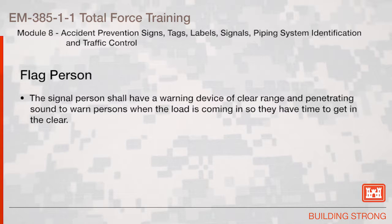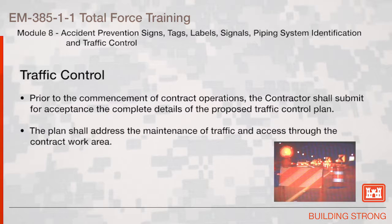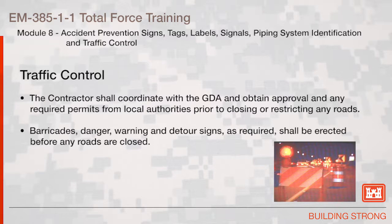The signal person shall have a warning device of clear range and penetrating sound to warn persons when the load is coming in so they have time to get in the clear. Prior to the commencement of contract operations, the contractor shall submit for acceptance the complete details of the proposed traffic control plan. The plan shall address the maintenance of traffic and access through the contract work area. The contractor shall coordinate with the GDA and obtain approval and any required permits from local authorities prior to closing or restricting any roads.